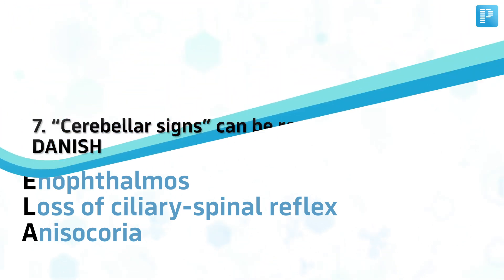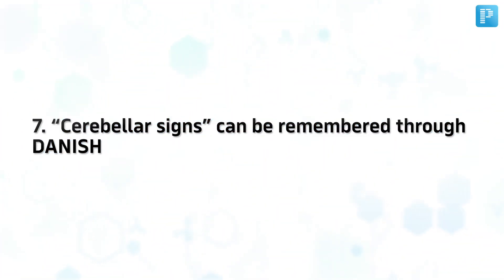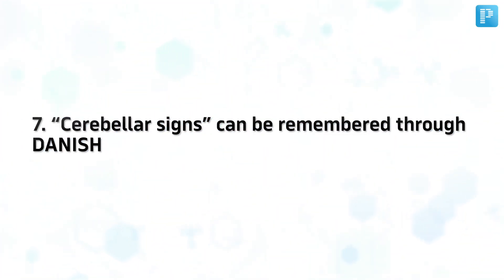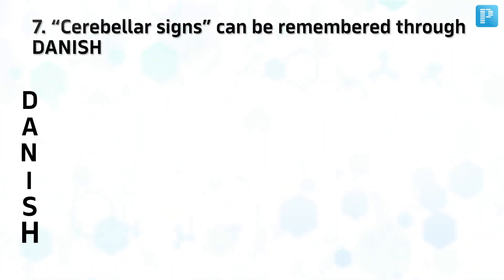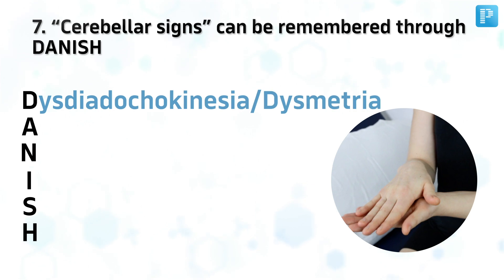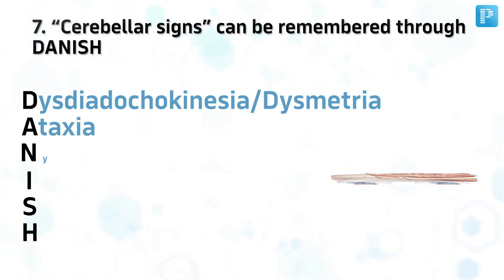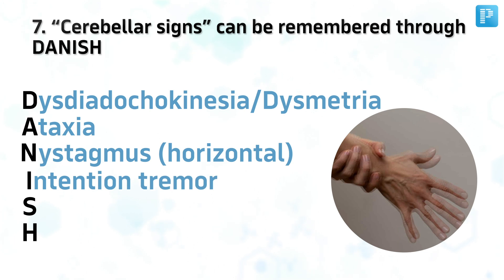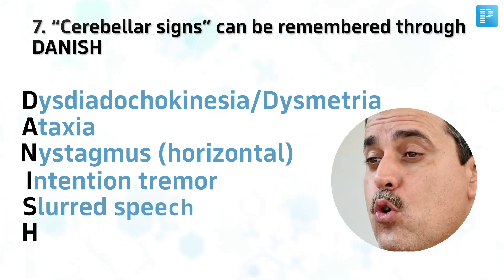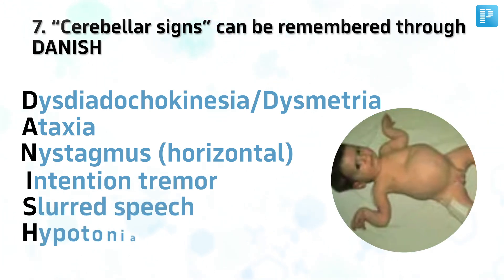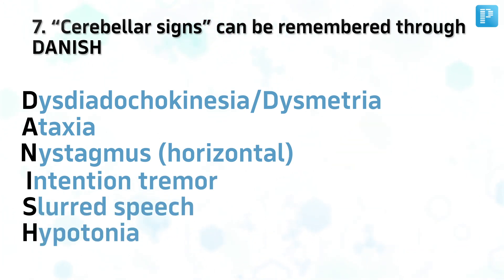Number 7. Cerebellar signs can be remembered through DANISH: Dysdiadochokinesia, Dysmetria, Ataxia, Nystagmus, Intention tremor, Slurred speech, Hypotonia.